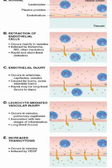Now let's look at endothelial injury, which occurs in arterioles, capillaries, and venules. This is caused by burns and some microbial toxins, and is rapid, although it may be long-lived — hours to days. Next, we have leukocyte-mediated vascular injury, which occurs in venules and pulmonary capillaries, and is associated with late stages of inflammation, lasting long hours.